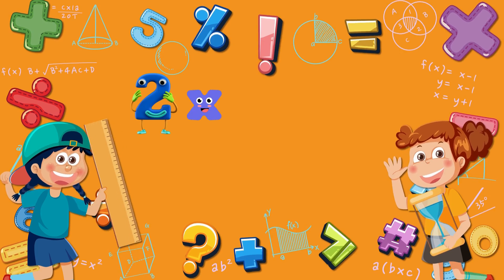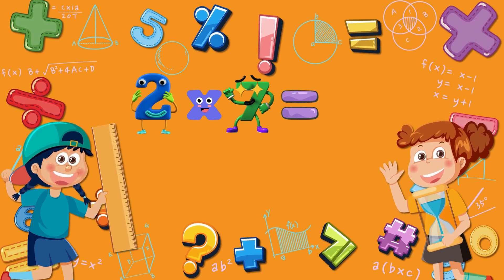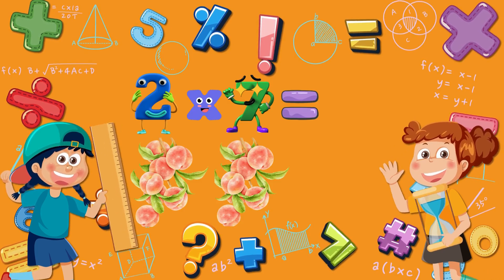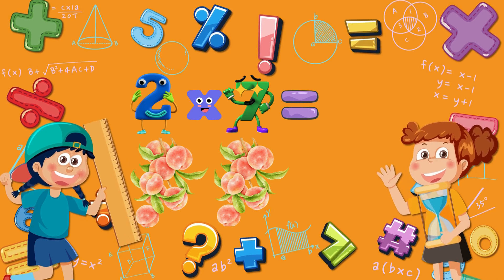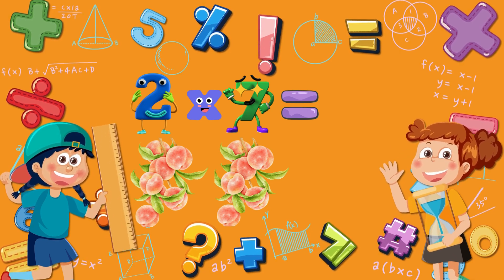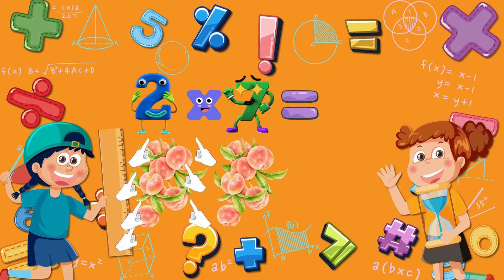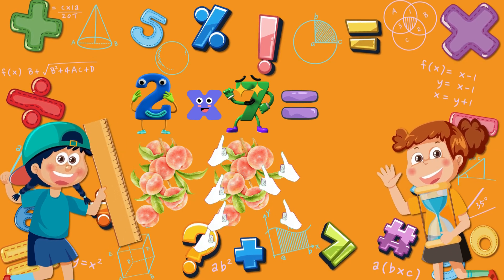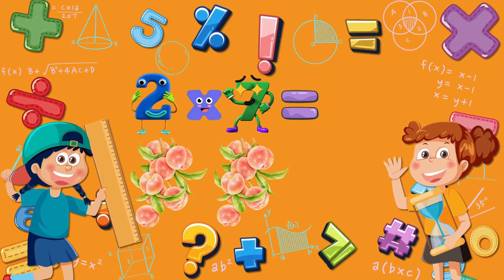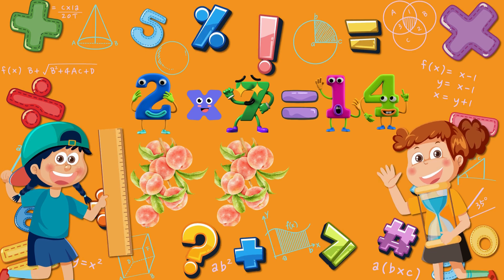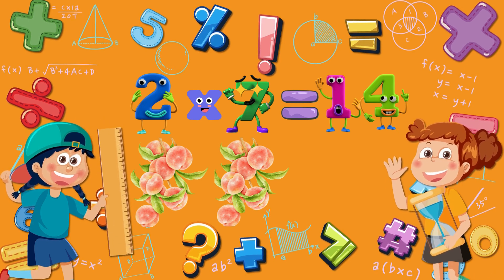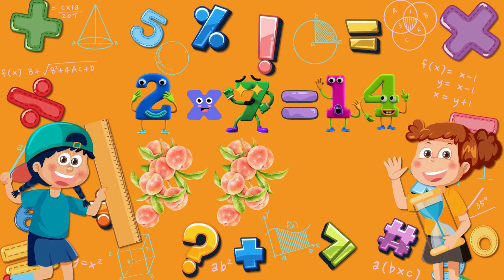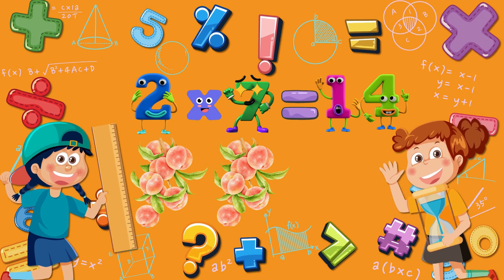Two times seven is equal to? Two branches, each with seven peaches. Seven peaches on the first branch, and seven on the second branch. Seven plus seven is equal to fourteen. Two times seven is equal to fourteen.